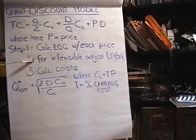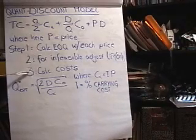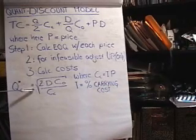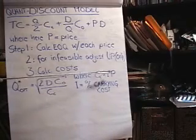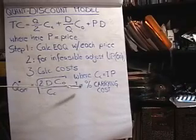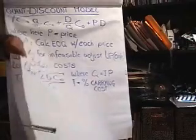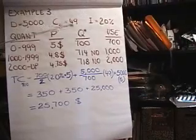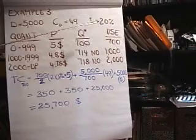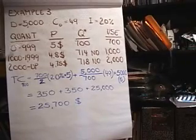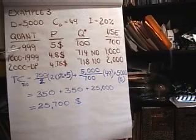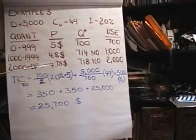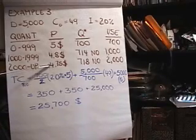There's a three-step procedure. We calculate the EOQ for each price. If it's infeasible, we adjust it up only. We never adjust down. And then the third step is we calculate the cost. So it's just your basic EOQ model that we're going to be using. Except now, C sub C is I times P, where I is the percentage carrying cost. As an example, let's say that our annual demand is 5,000. Our order cost is $49. Our carrying cost percent is 20% of the price. So we've got three different quantities with three different prices. If you order between 0 and 999, the price is $5. If you order at least 1,000 up to 1,999, you get a $0.20 discount to $4.80. 2,000 and up gives us a $0.25 discount, the biggest discount at $4.75.